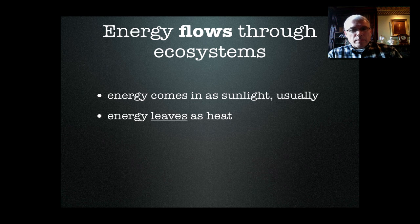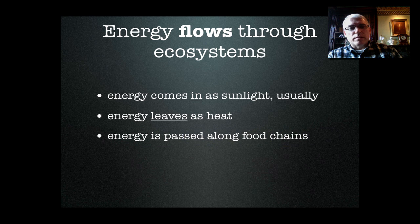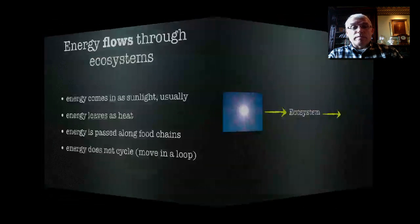It can be something as obvious as the body heat coming off of your body after you digest and burn your food, or it could be a little harder to see, like the heat leaking out of decomposing vegetation in a compost pile or something. This energy is passed along through food chains and it doesn't cycle — it doesn't move in a loop. Many things in ecosystems do cycle, but energy is not one of them.